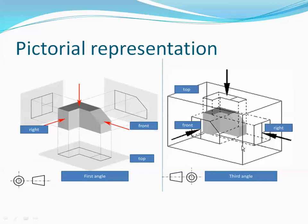In third angle projection, the front view is at the bottom of the top view, the top view is at the top, and the right view is on the right side.